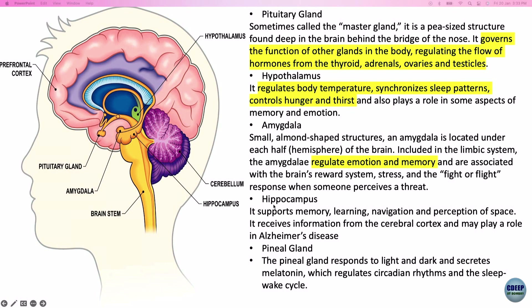The hippocampus is important for memory, learning, navigation, and perception of spaces. It receives information from the cerebral cortex and may play a role in Alzheimer's disease. The pineal gland secretes melatonin and responds to light and dark, regulating circadian rhythm and the sleep-wake cycle. You need increased melatonin at night to fall asleep.